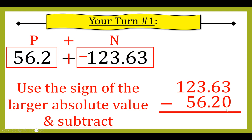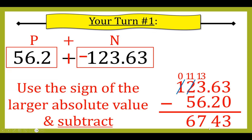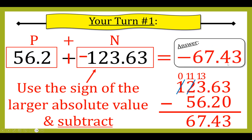Since it's a positive plus a negative, I use the sign of the larger absolute value and subtract. I line up 123.63 minus 56.2, fill in the zero, and subtract. Three minus zero is three, six minus two is four, can't do three minus six so I borrow — thirteen minus six is seven, can't do one minus five so I borrow — eleven minus five is six. I bring down my decimal to get 67.43. The larger absolute value is 123.63, which was negative, so my answer is negative 67.43.